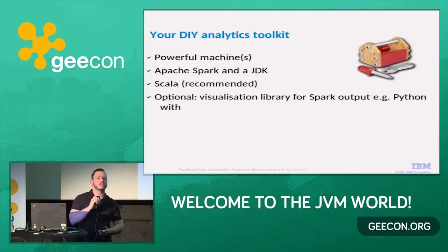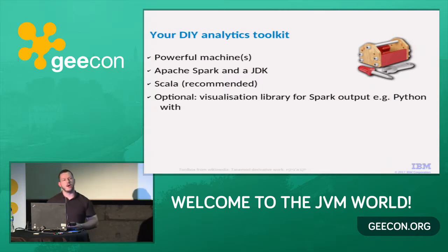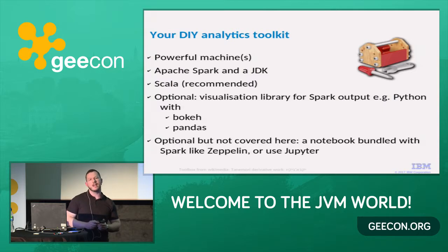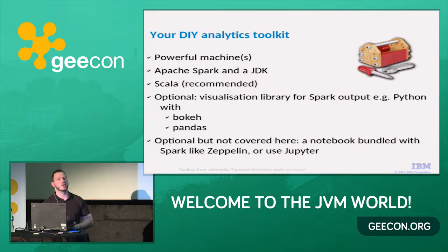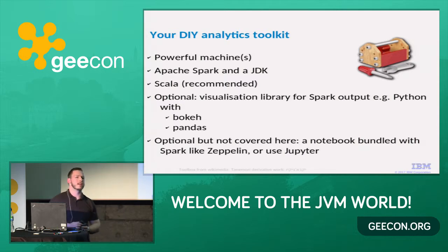Visualizations are optional. You can show somebody a big CSV file and say, here's the spreadsheet — enjoy. Or you can use something like a Python library. I'm going to use something called Bokeh and Pandas to do the visualizations. You can also get a notebook solution — something like Zeppelin or Jupyter will handle the visualizations for you. You can get Zeppelin with Spark already bundled together. Those are quite nice things to have to do some analytics of your own, and something you can do on your laptop.